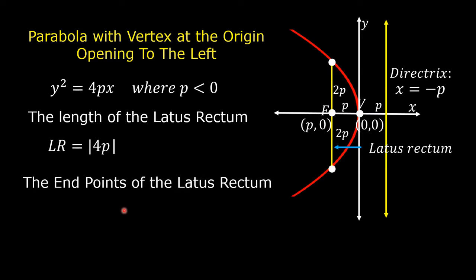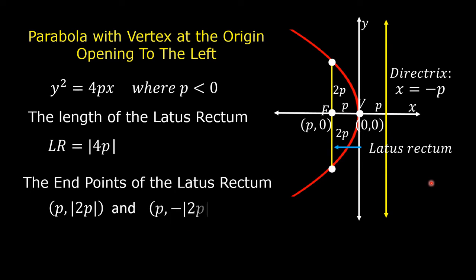The endpoints of the Latus Rectum: for the first endpoint, we have (p, |2p|). And for the second endpoint, we have (p, −|2p|).